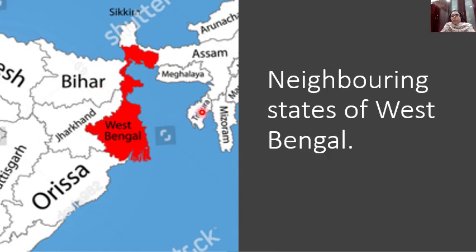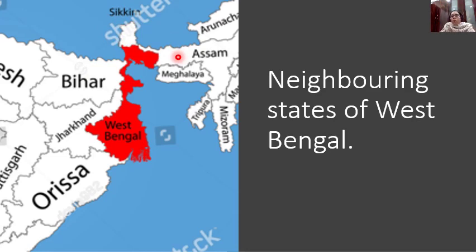Try to understand the neighboring states of West Bengal. There are five neighboring states of West Bengal: Odisha, Jharkhand, Bihar, Sikkim, and Assam.